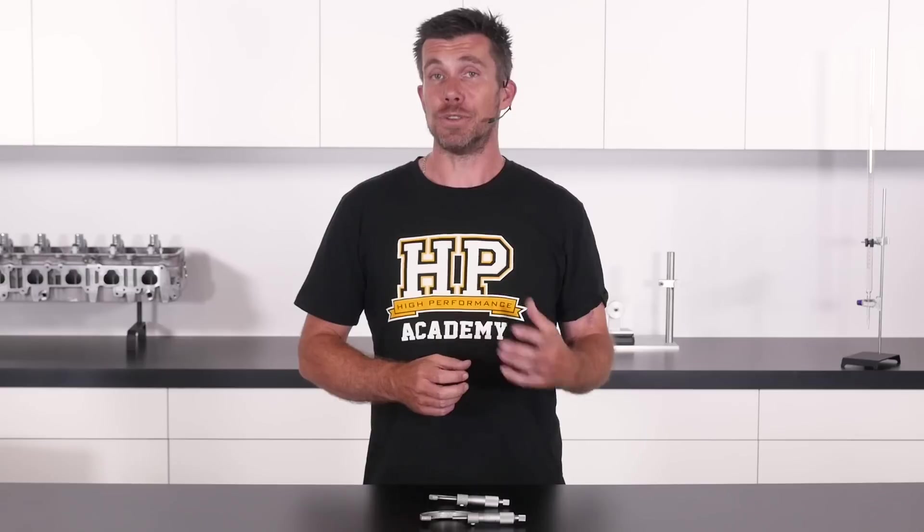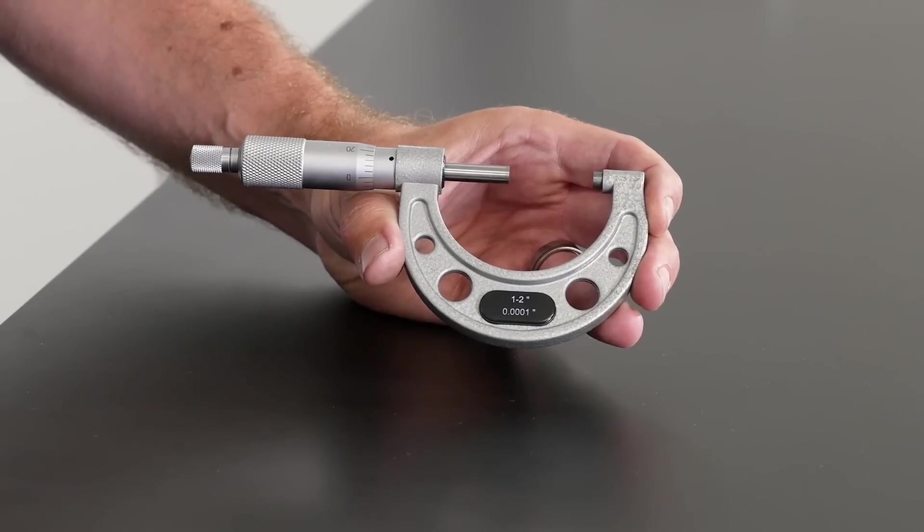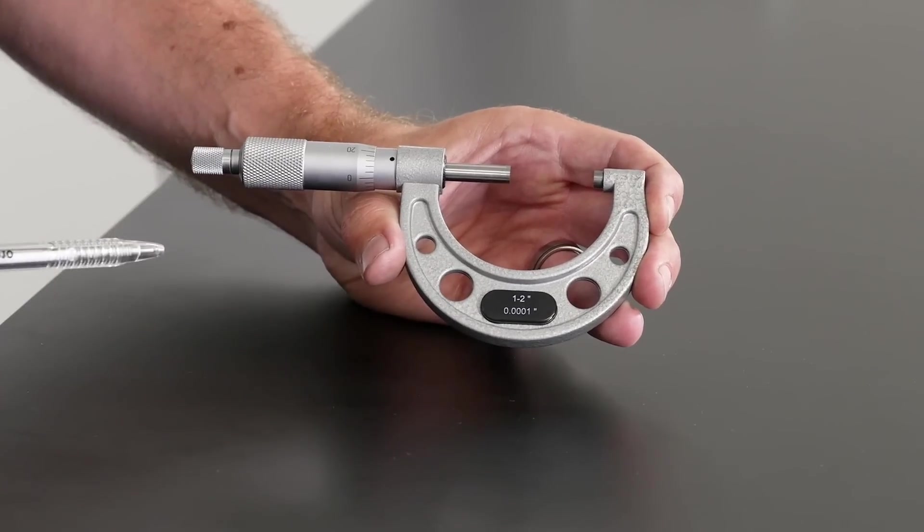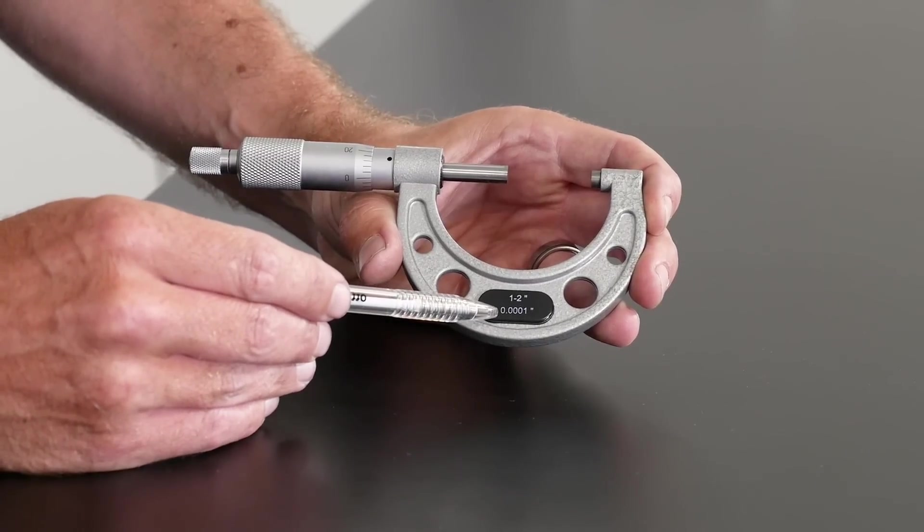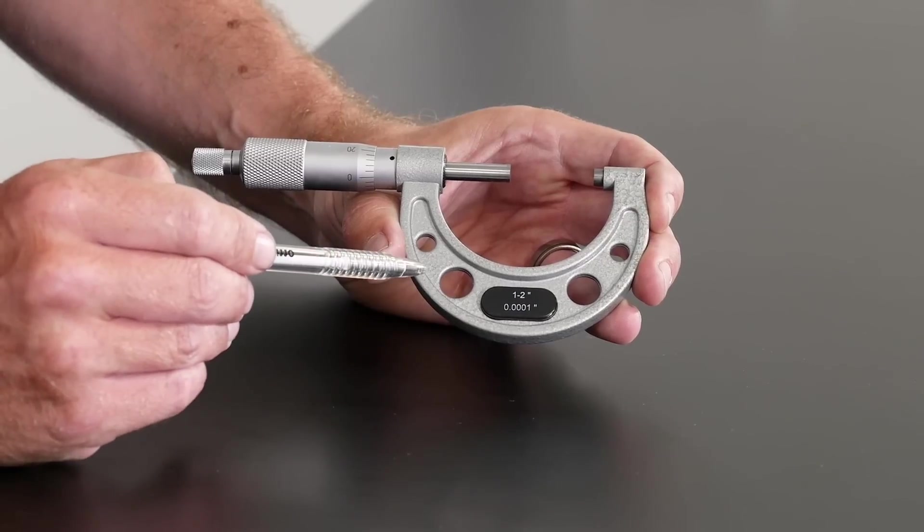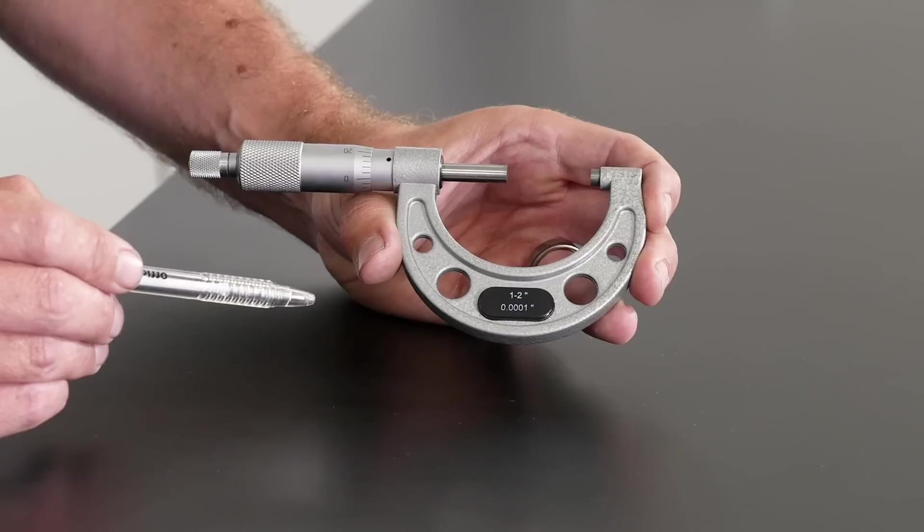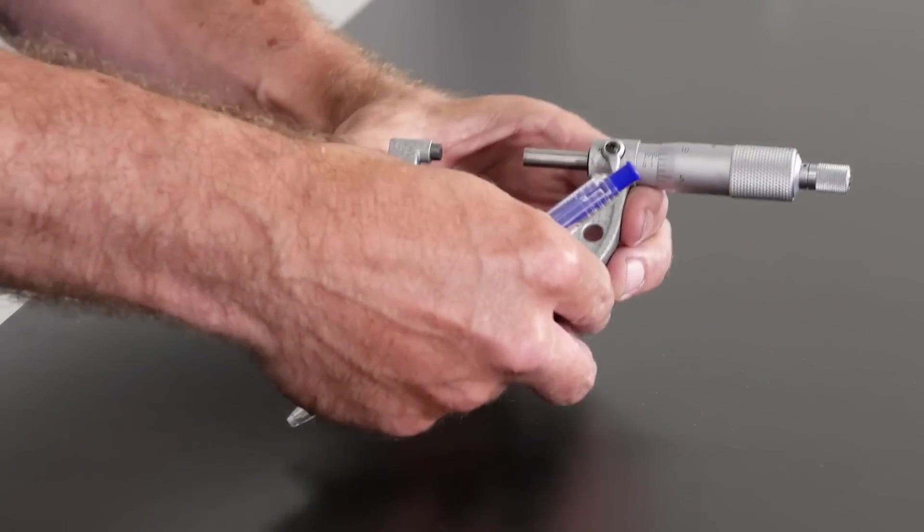Before we get started using the micrometer, we're just going to have a look at the different components that make up the micrometer. This is our 1 to 2 inch micrometer. First of all we're going to have a look on the little plaque here, we can see that it's labeled 1 to 2 inch. We can also see that the precision of this micrometer is also listed at 0.0001 of an inch, or one ten thousandths of an inch. I'm just going to flip it around so we can actually see the scale.